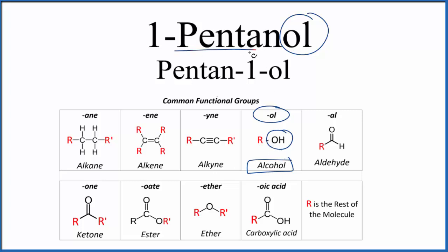For the 'pent' — when we look at 'pent', that means five. So we're going to have five carbon atoms in a chain. We'll have all single bonds, and then we'll have an OH group attached to one of the carbons.